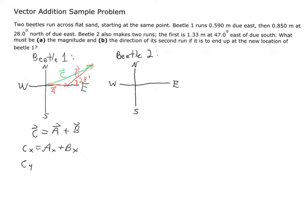So right away we can see we'll need to break things into x and y components. Moving to beetle 2: we're told it first moves 1.33 meters, 47 degrees east of due south — that direction I'll call vector d. We know beetle 2 ends up at the same place as beetle 1, so it has the same resultant vector c. The second leg of beetle 2's journey I'll call vector e, and the question is: what is vector e? That's our end goal.